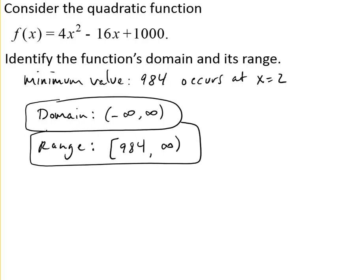In other words, this is a parabola facing up with the vertex at (2, 984). All the y-coordinates start at the lowest, 984, and go up forever.